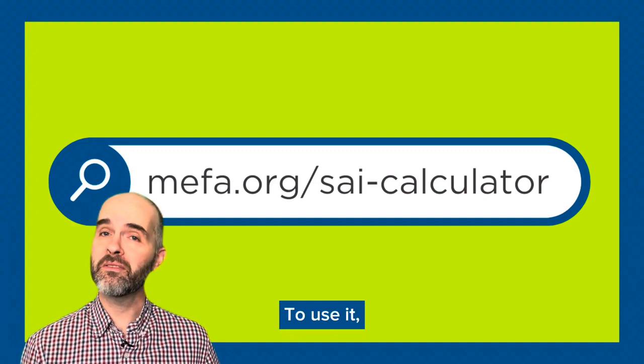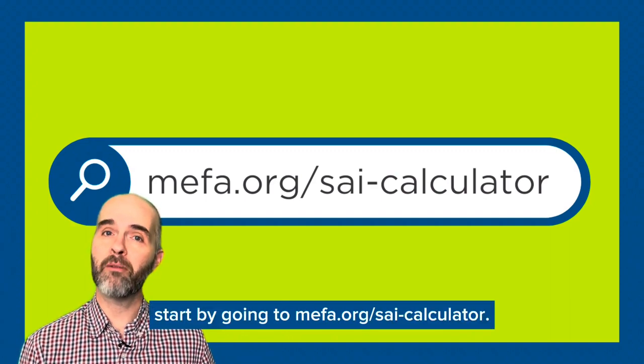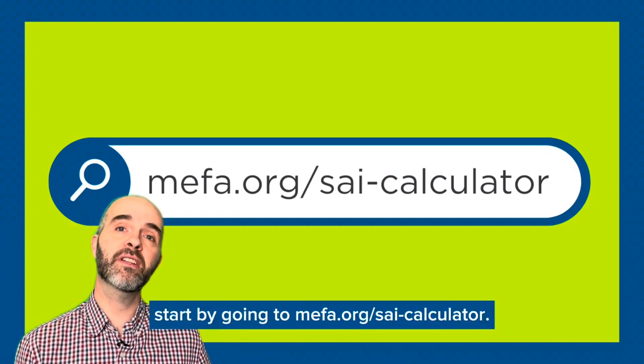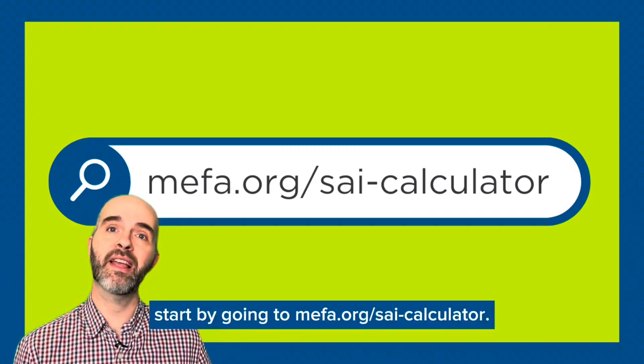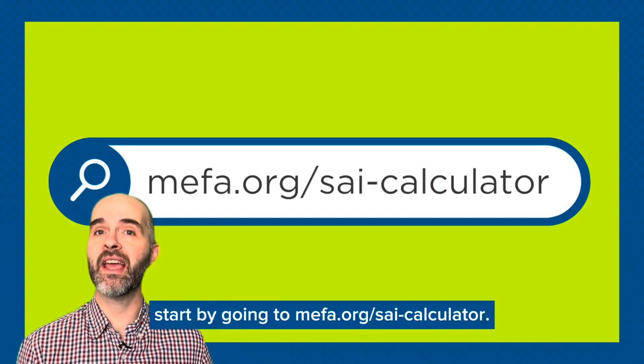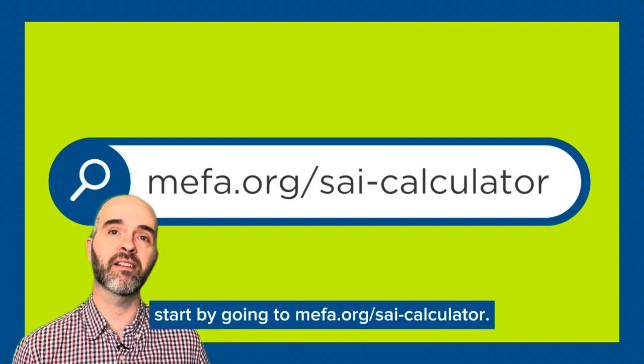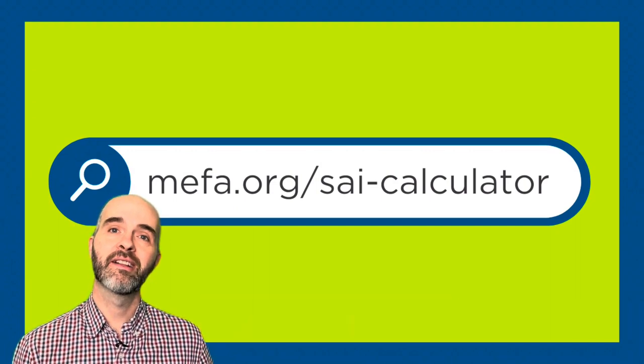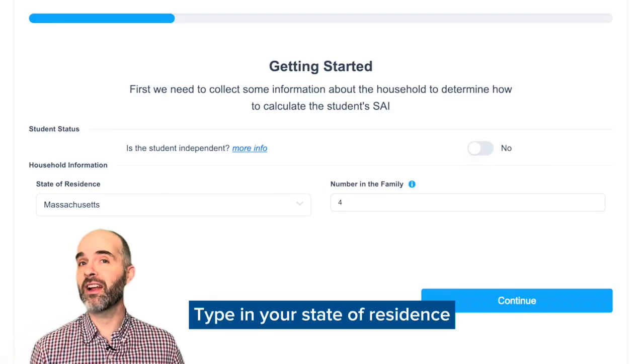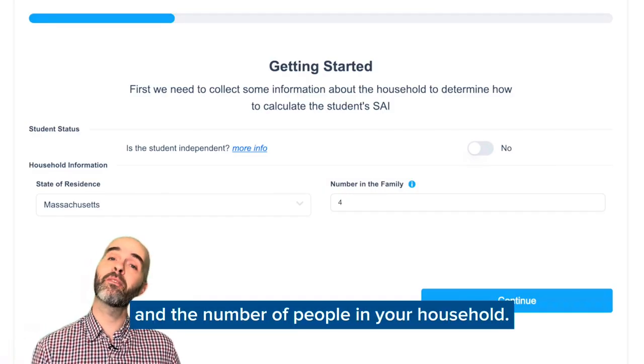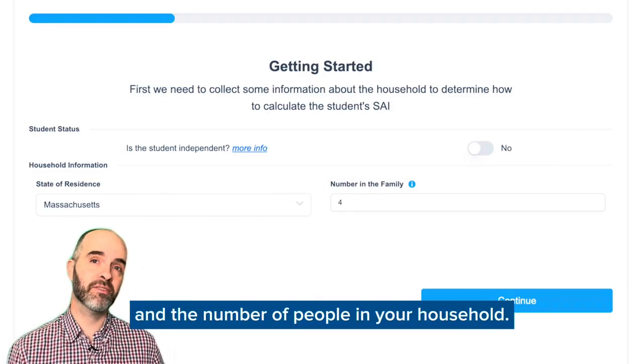To use it, start by going to MIFA.org/SAICalculator. Type in your state of residence and the number of people in your household.